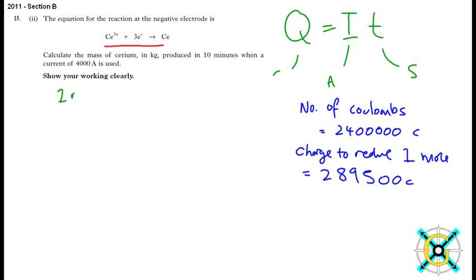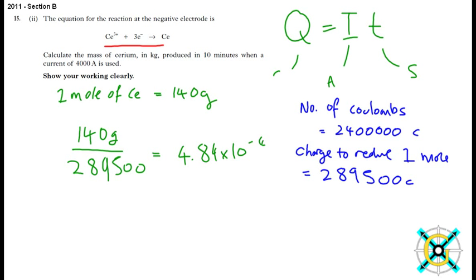Using the atomic mass, we know one mole of Ce is equal to 140 grams. Therefore, to work out the number of grams per coulomb, we do 140 grams over 289,500, which gives us 4.84 times 10 to the minus 4 grams per coulomb. So for every coulomb used, we produced 4.84 times 10 to the minus 4 grams.